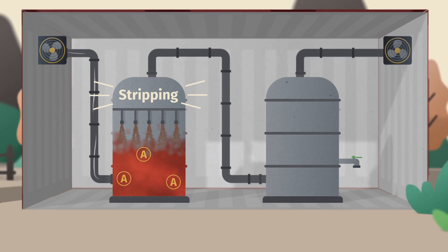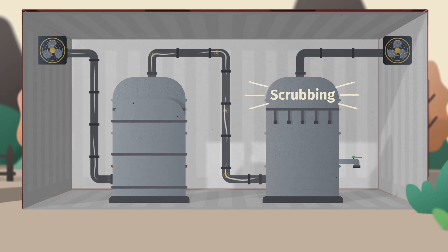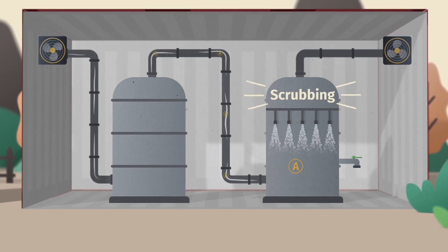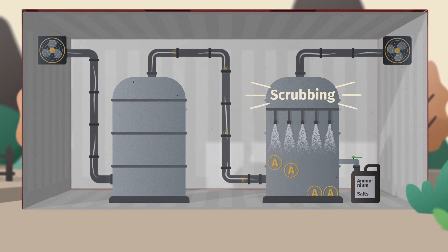Then, air blowing through the stripping compartment transfers the gaseous ammonia into the scrubbing compartment. Here, the ammonia-rich air is sprayed with a strong acidic solution, forming ammonium salts and leaving clean air behind.